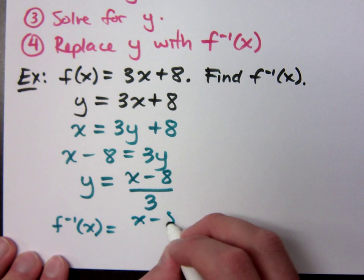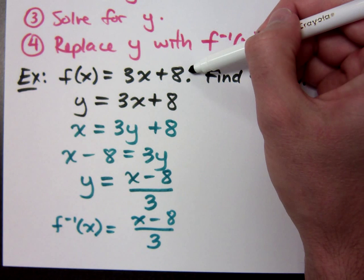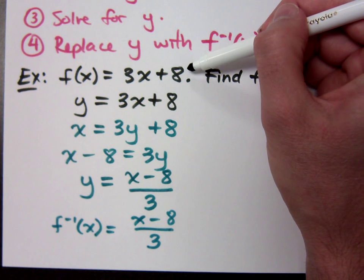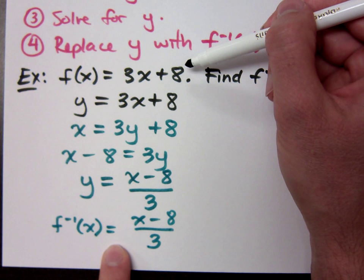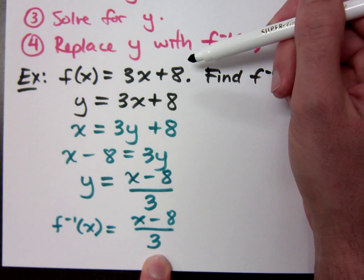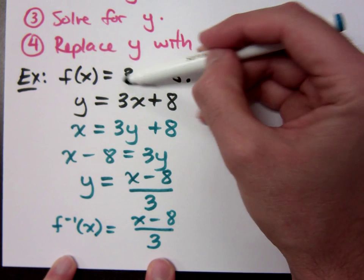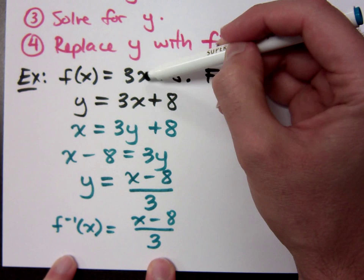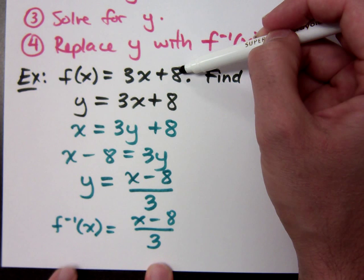So what we just found out here is what the inverse function would be for my original guy right here. So if this is your original function, I'm claiming that f inverse, its inverse, what would undo all that is x minus 8 over 3. So basically it says this. A guy walks into a bar. And this is what the bar does to him. He takes him, multiplies him times 3, and adds 8. That's what this function would do to it, right?